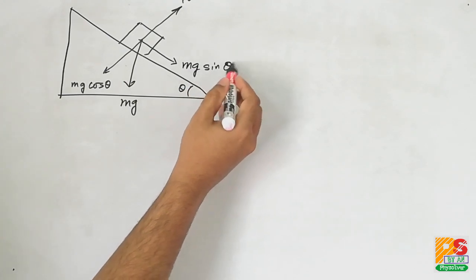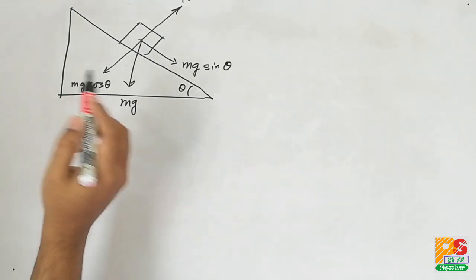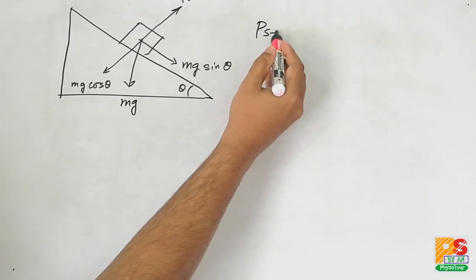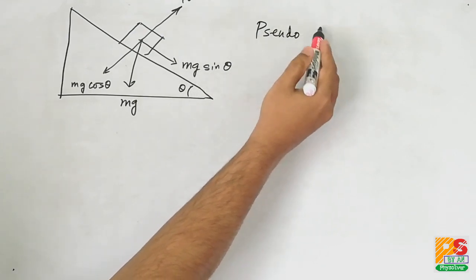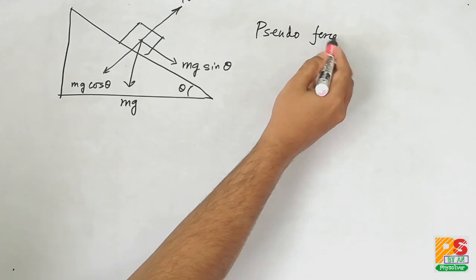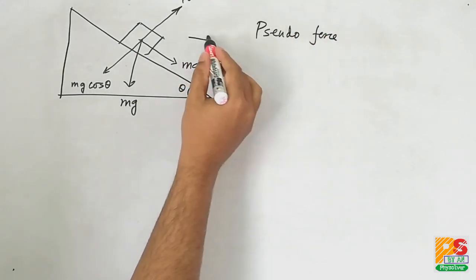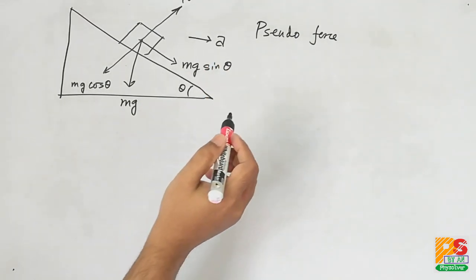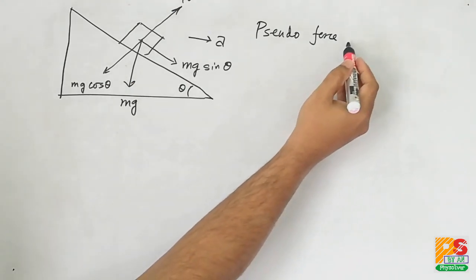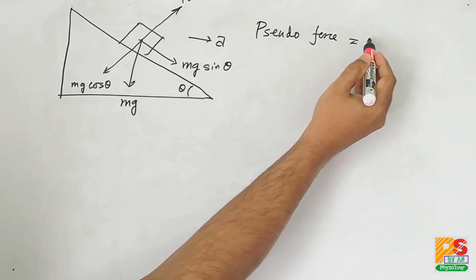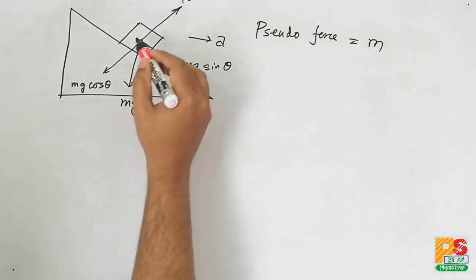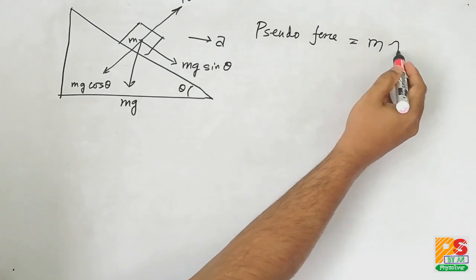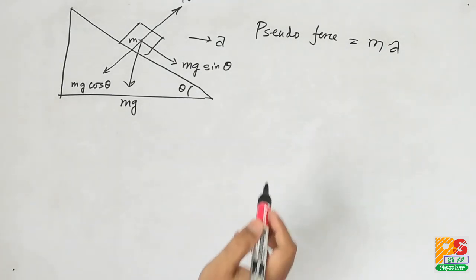Now see, as the wedge is accelerated towards right with some acceleration a, a pseudo force will act on the body. The magnitude of pseudo force is the product of mass of the body and acceleration of the frame. Here mass of the body is M and acceleration of the frame is A, so pseudo force magnitude will be MA.